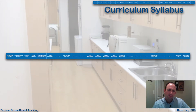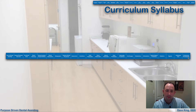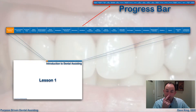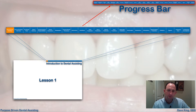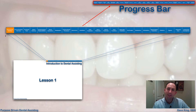So here's the curriculum syllabus — all those items, 23 of them, that I mentioned before, broken out into the foundation and also into the dental operatory. You can see this fits right here into the very top of the screen, above the title of the lesson that we're on. This will be running throughout the entire lecture series of 23 lessons, and the lesson we're on will be highlighted in orange, so it'll be very clear where you're at in the entire process.